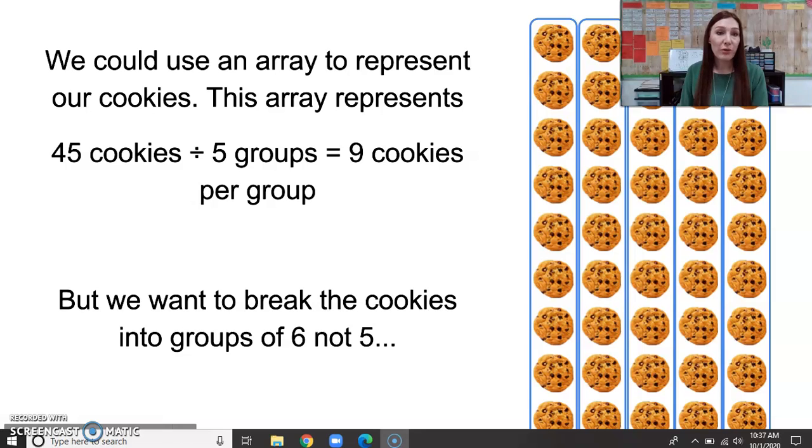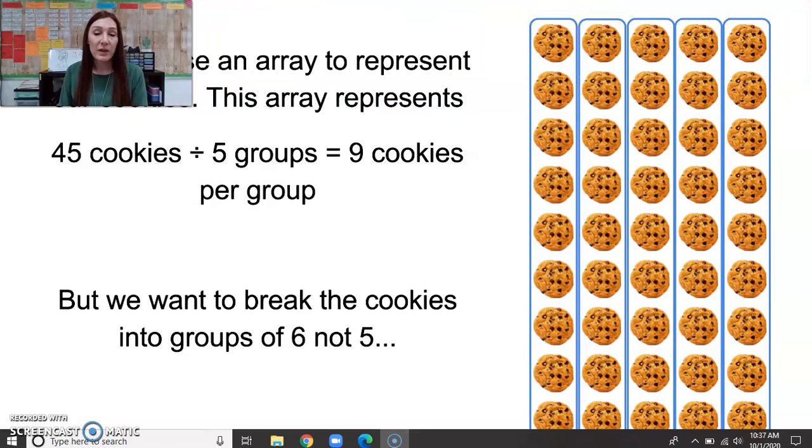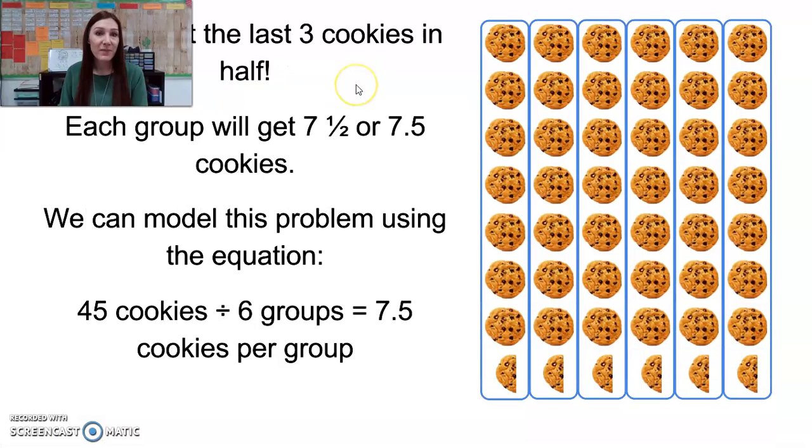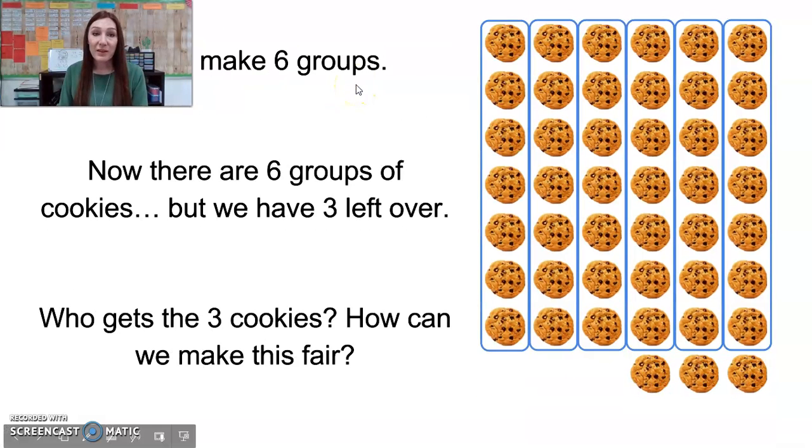So we could use an array to represent our cookies. This array represents 45 cookies divided by five groups and it equals nine cookies per group. But we want to break the cookies into groups of six, not five. So let's make six groups. Now there are six groups of cookies, but we have three left over.